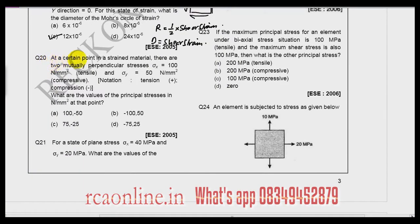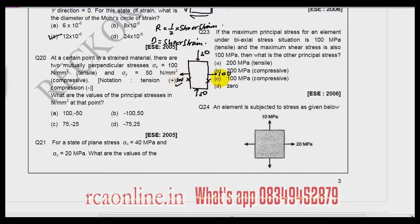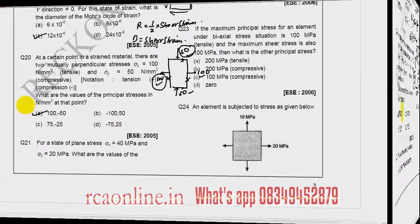Question number 20: at a certain point in a strained material there are two mutually perpendicular stresses — sigma x tensile and sigma y compressive. What are the principal stresses at that point? The stress element shows 150 with no shear applied, so shear equals 0. Since there is no shear, these are already principal planes and the given stresses are principal stresses: plus 100 and minus 50 (compressive). Answer is 100 and minus 50 — option A.